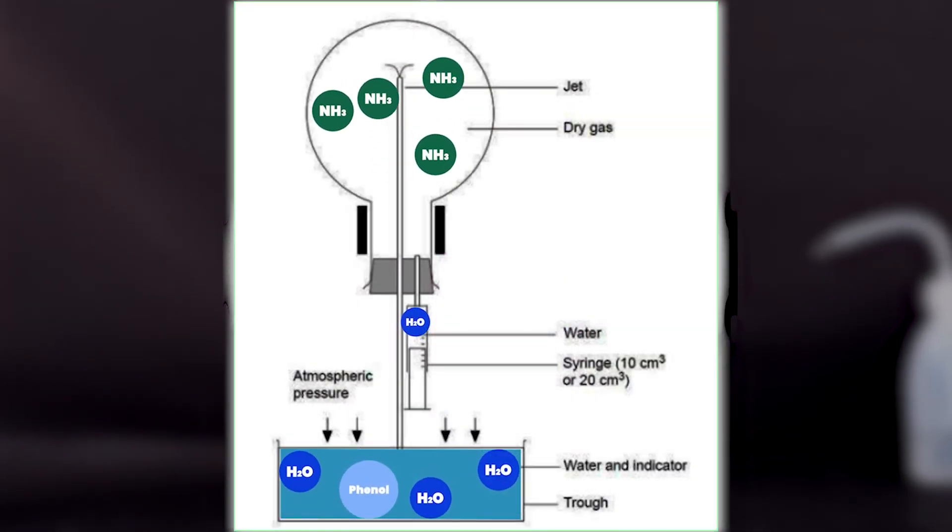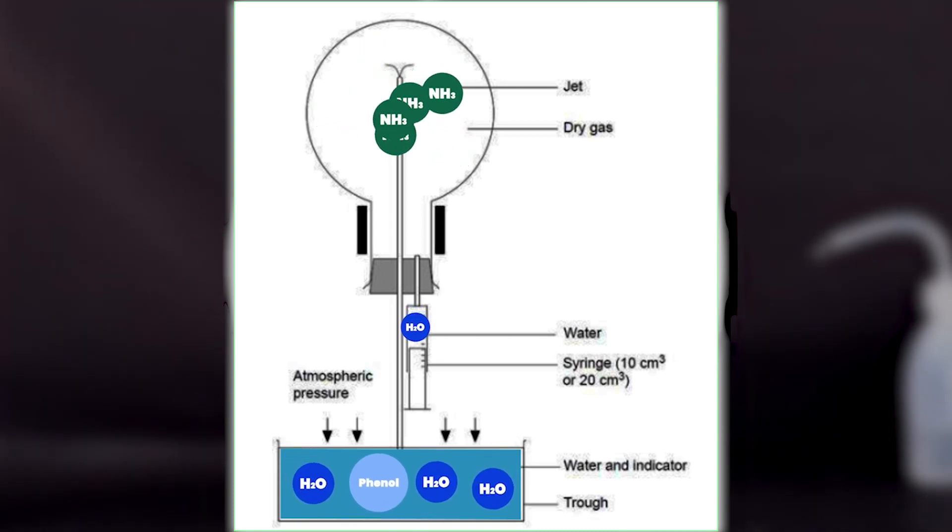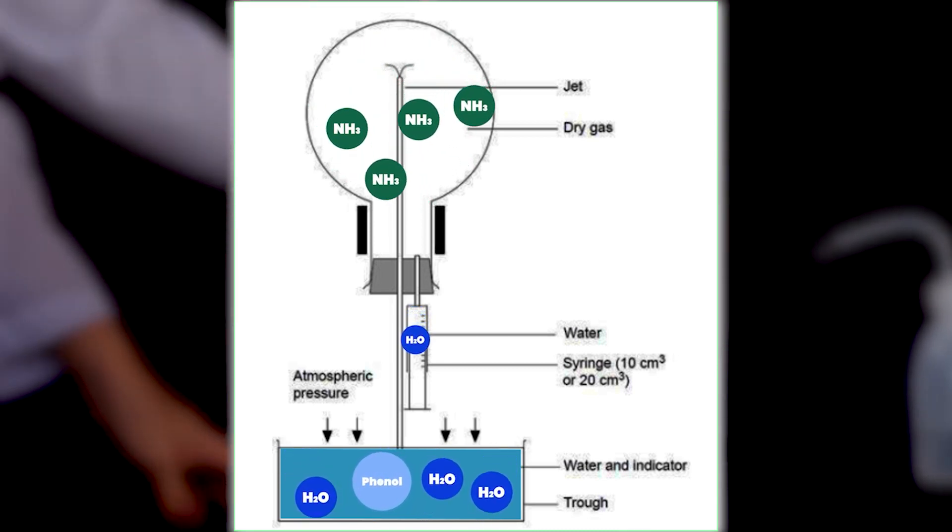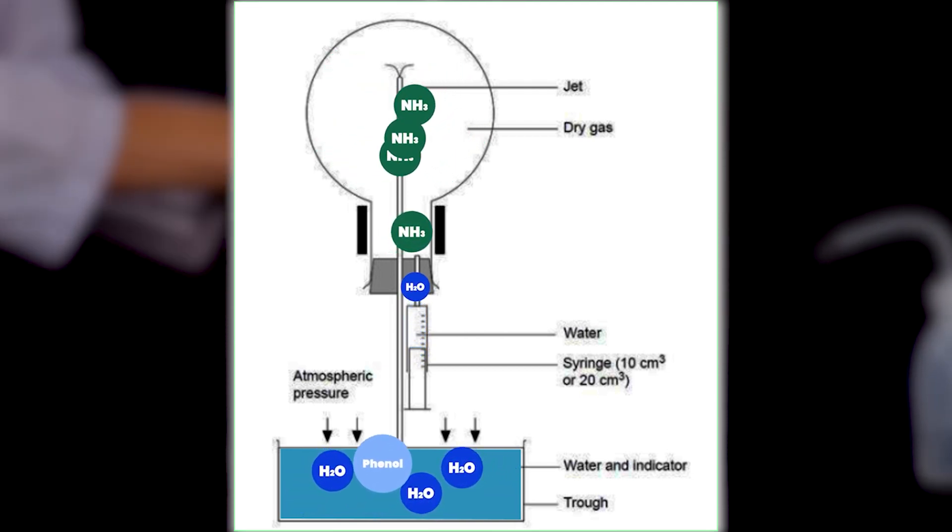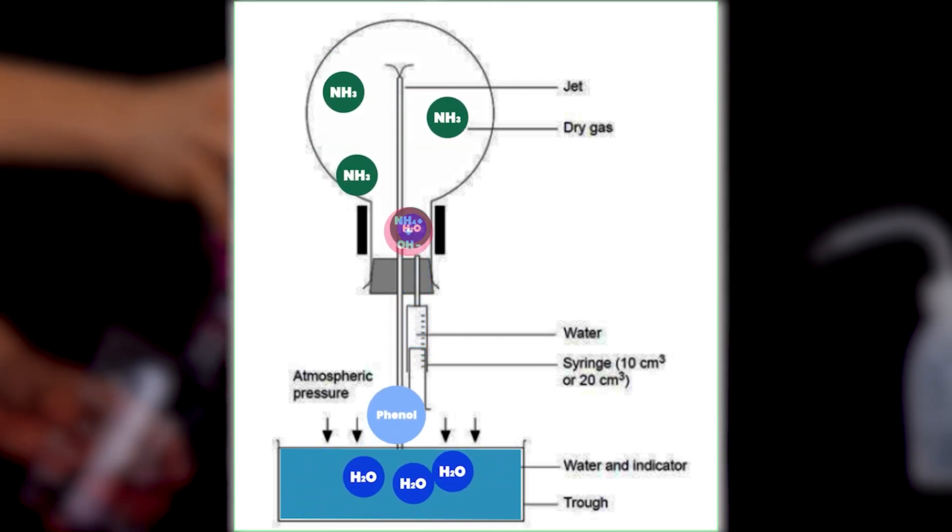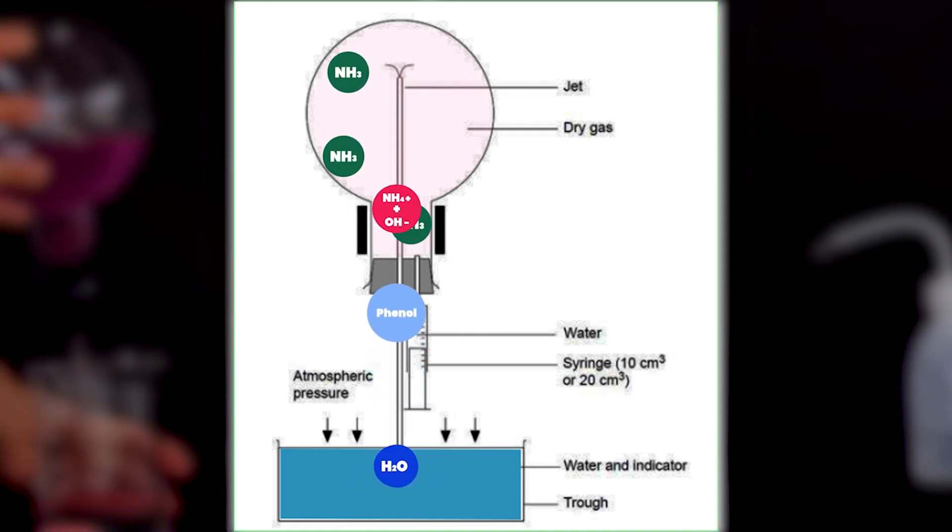However, the fountain effect we observed previously is a bit trickier to wrap your head around. However, to put it in simple terms, when water enters the flask on top, it reacts with the ammonia to produce a solution of ammonia hydroxide.